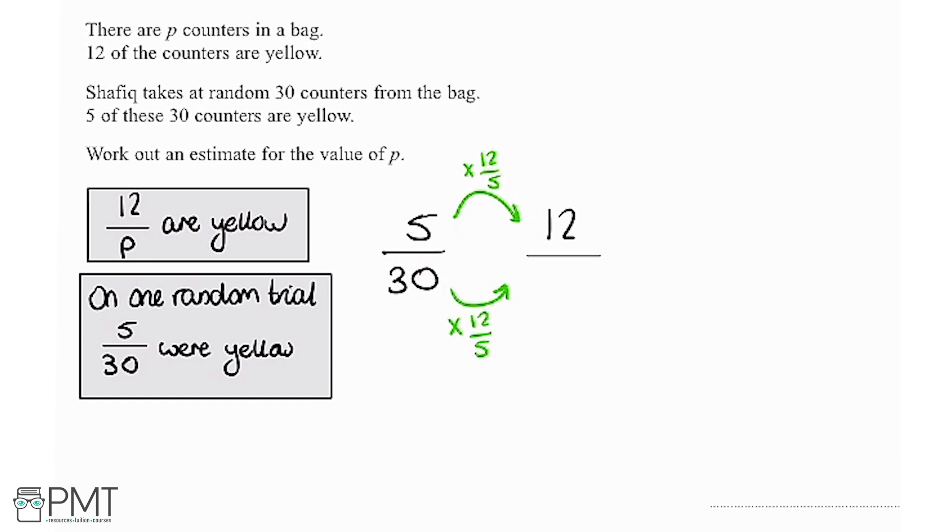Now because this is non-calculator we need to work this out. You can use any method that works best for you. But I'm going to do it like this, we're going to say 30, I'm going to write that as a fraction, because that's the same as saying 30 over 1. And we're multiplying that by 12 over 5.